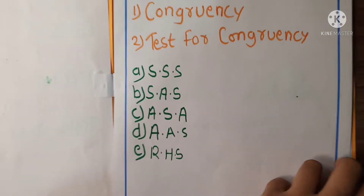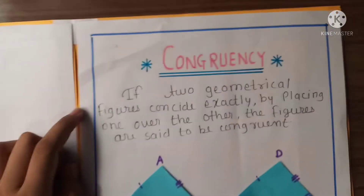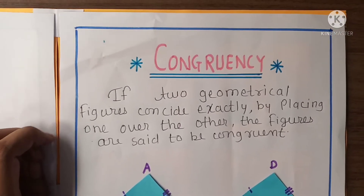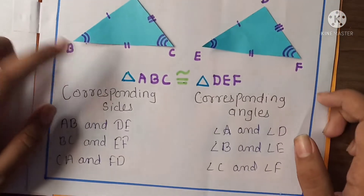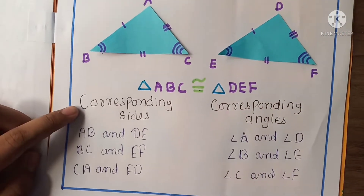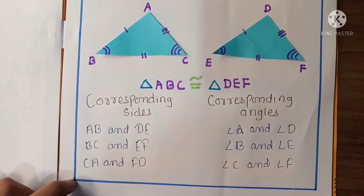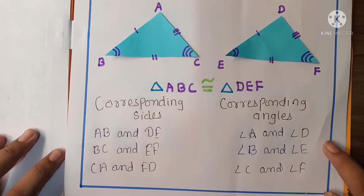Here is the information about congruency. If two geometrical figures coincide exactly by placing one over the other, the figures are said to be congruent. Here are two congruent triangles: triangle ABC is congruent to triangle DEF. The corresponding sides are AB and DE, BC and EF, CA and FD. The corresponding angles are angle A and angle D, angle B and angle E, angle C and angle F.